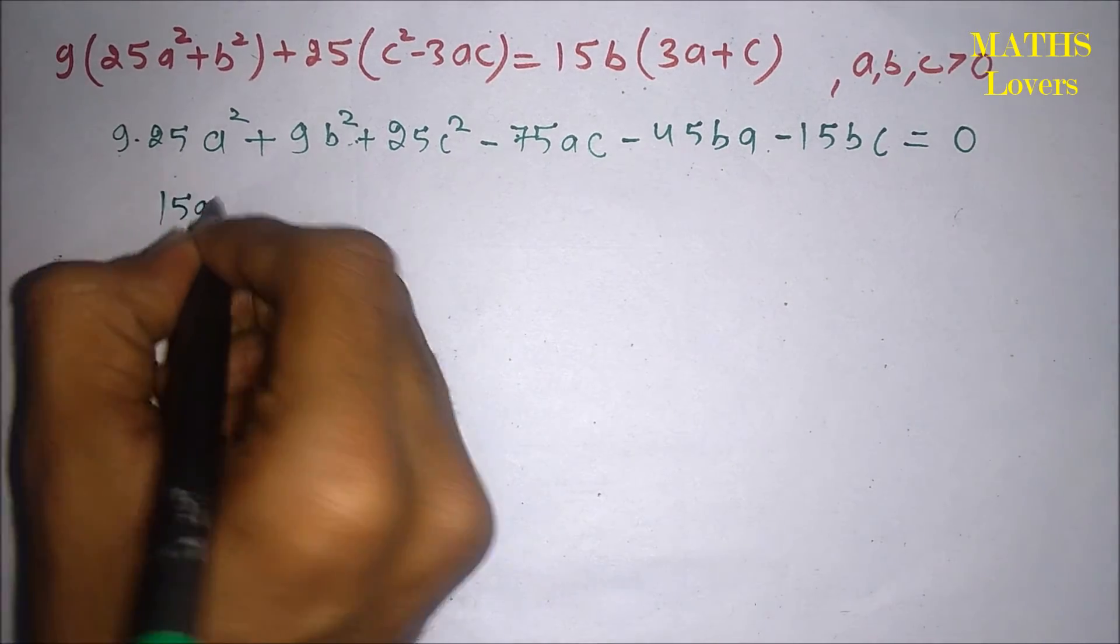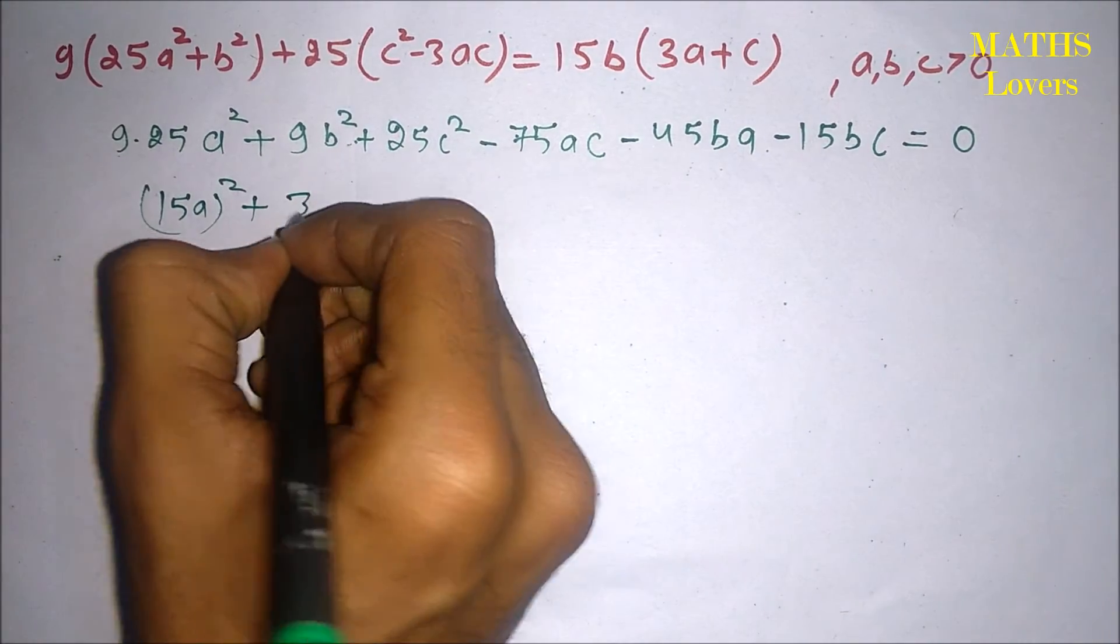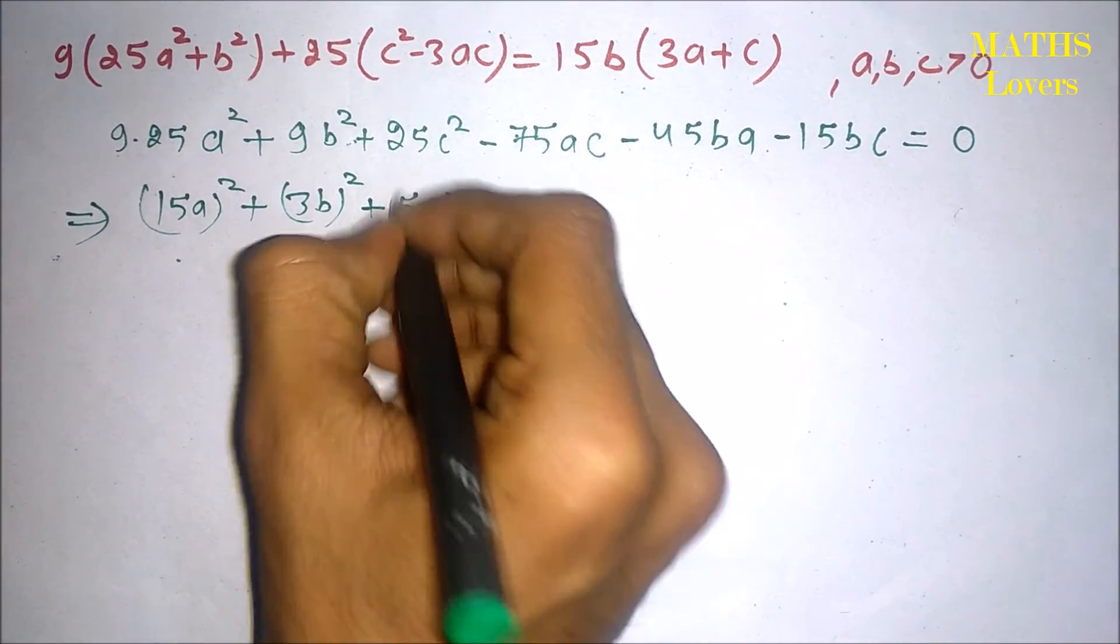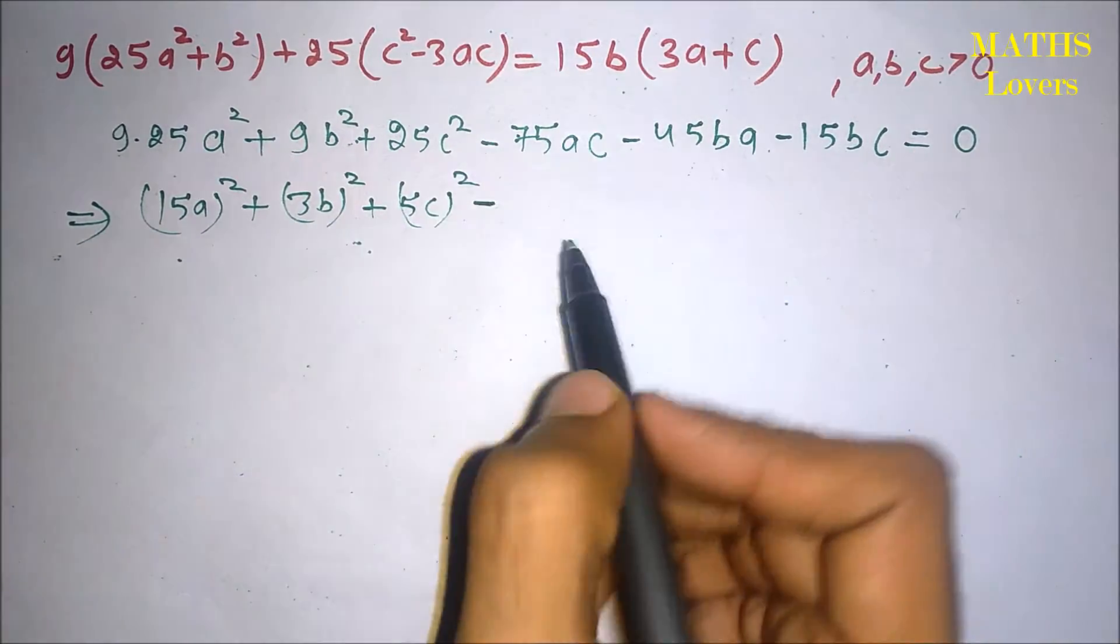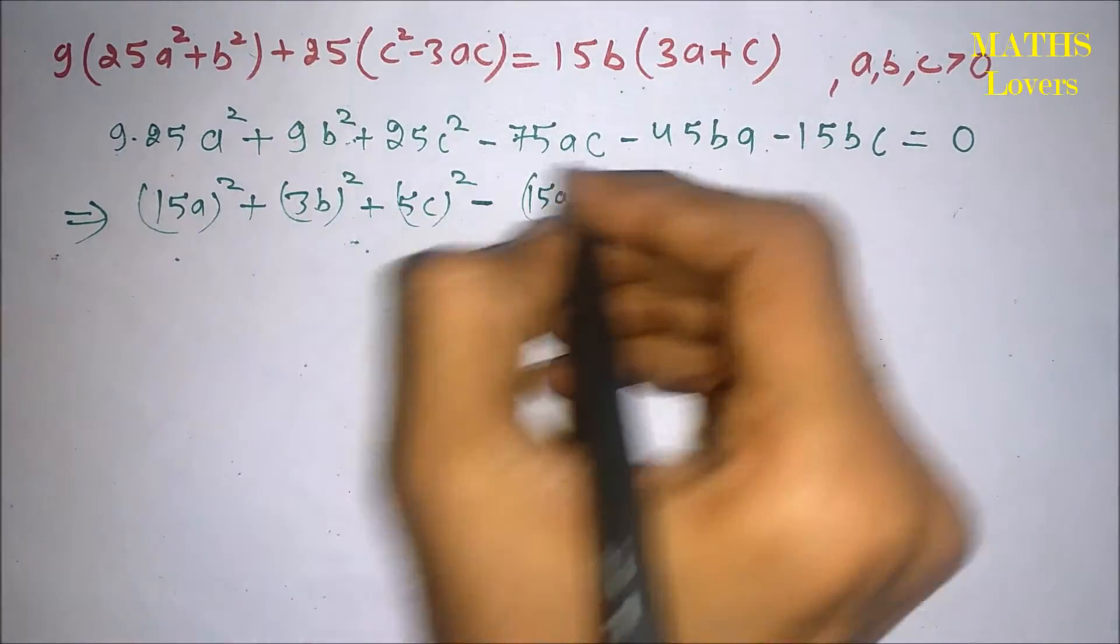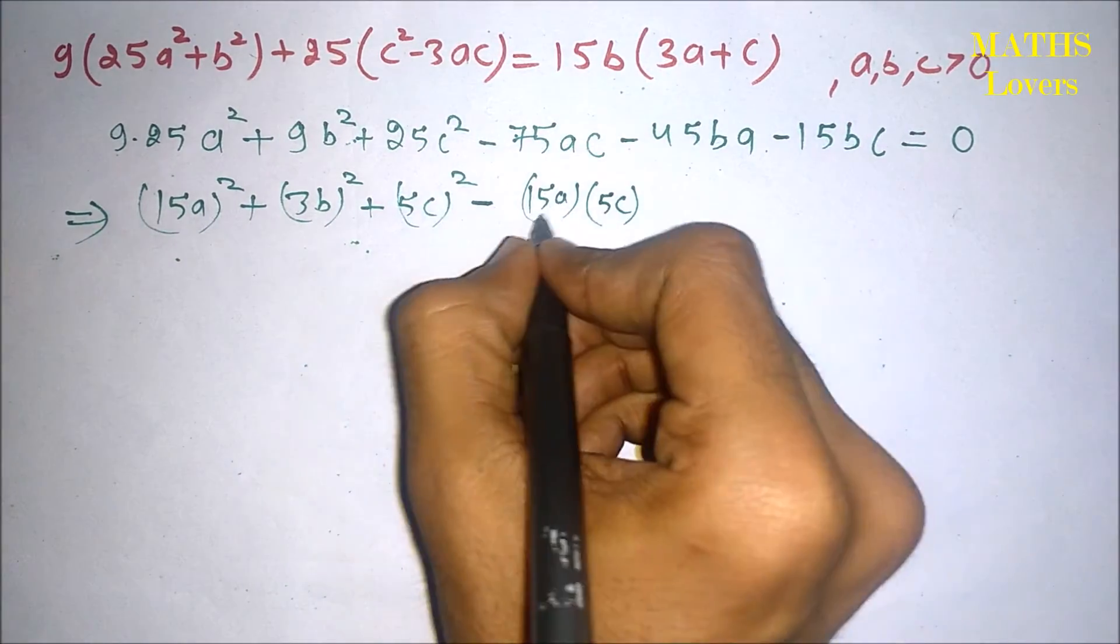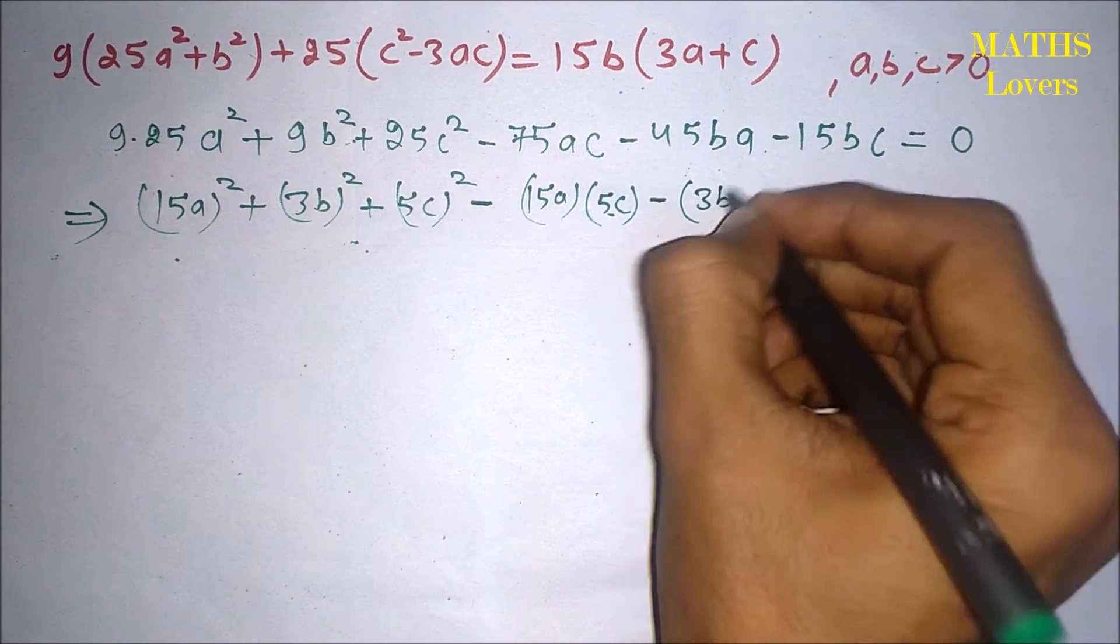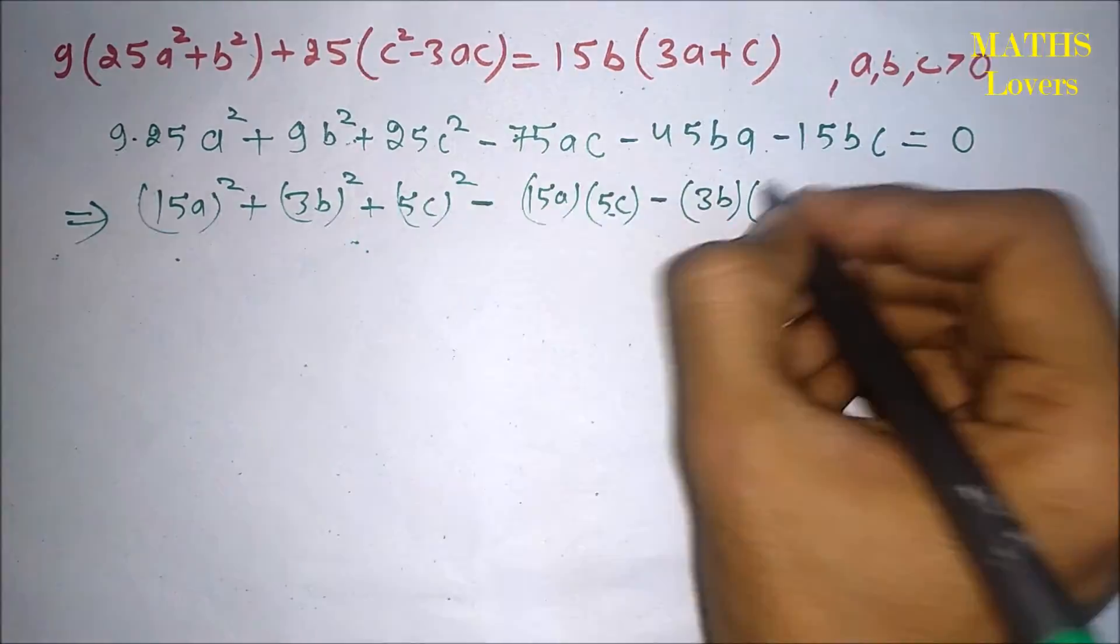so it is like 15a² plus 3b² plus 5c². And if we see that, we can write it 15a multiply 5c, that will be 75, minus 3b and a, 15a, that is 45